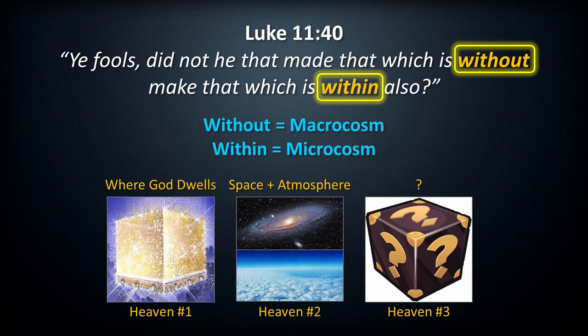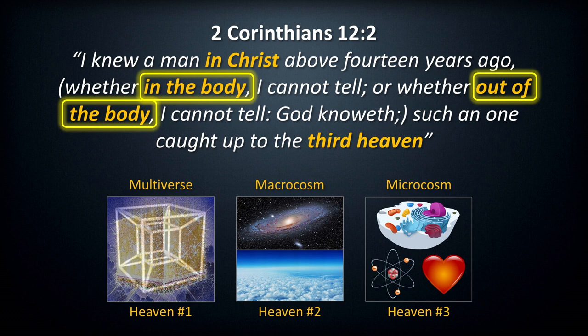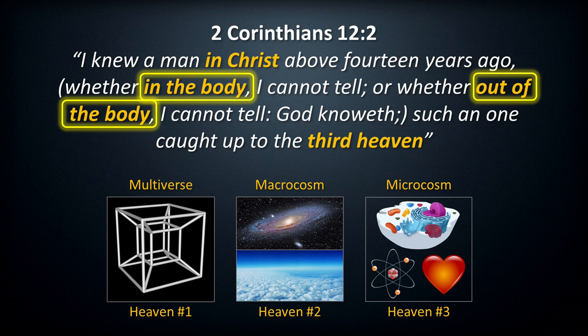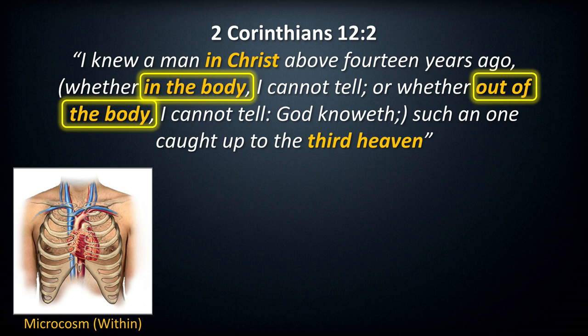Jesus contrasts the word 'within' with the word 'without' — Luke 11:40. Without is what the Bible refers to as the macrocosm, everything we see around us. Within is the microcosm, that which is within all of us. Paul's verse has a double meaning: the phrase 'in the body' reveals what the third heaven is — it is the microcosm within each one of us. Heaven number two is 'out of the body,' or the macrocosm. Heaven number one is everything else, which we will refer to as the multiverse. Descriptions of New Jerusalem are most likely describing a tesseract — a picture of higher dimensions — which would explain its unusual cube-like appearance.